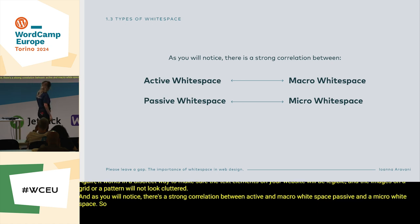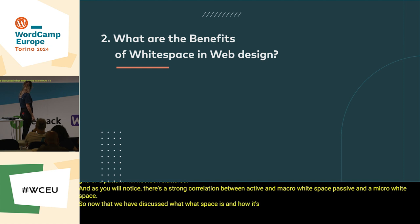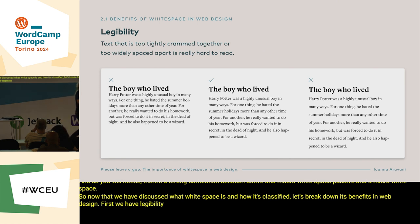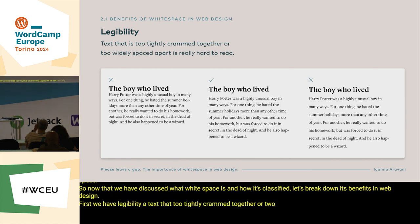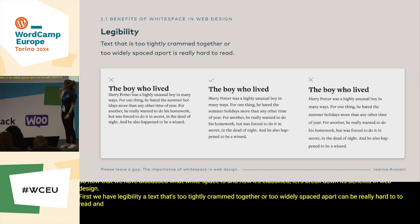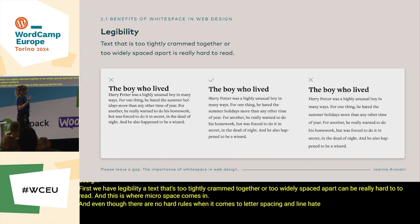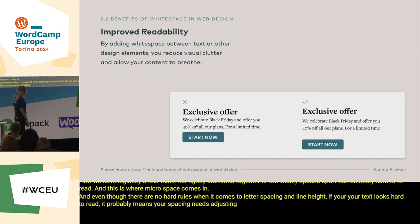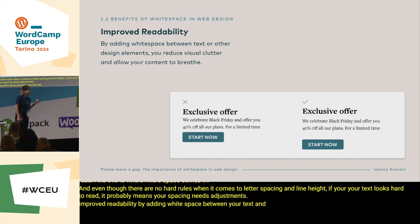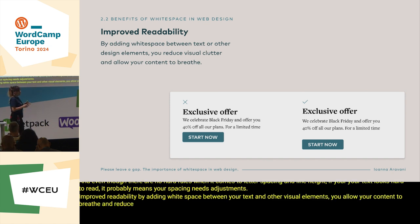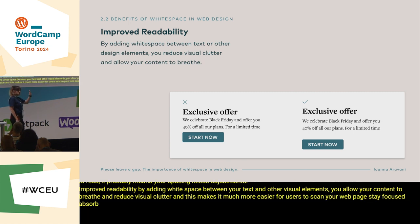Now that we've discussed what white space is and how it's classified, let's break down its benefits in web design. First, we have legibility. A text that's too tightly crammed together or too widely spaced apart can be really hard to read, and this is where micro space comes in. Even though there are no hard rules for letter spacing and line height, if your text looks hard to read, it probably means your spacing needs adjustments. Improved readability: by adding white space between your text and other visual elements, you allow your content to breathe and reduce visual clutter, making it much easier for users to scan your web page, stay focused, absorb the information, and keep reading.